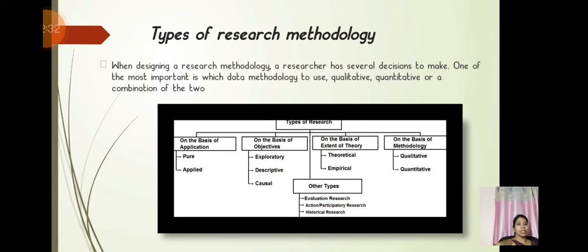Types of research methodology: Research methodology has been classified on four bases. First basis on application: pure and applied. Second basis of objective: exploratory, descriptive, causal. Third basis is extent of theory: theoretical, empirical. Fourth basis on methodology: quantitative and qualitative. Other types include evaluation research, action participatory research, and historical research.